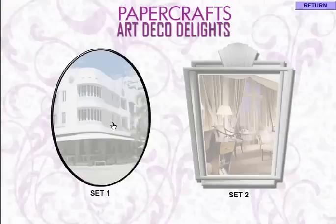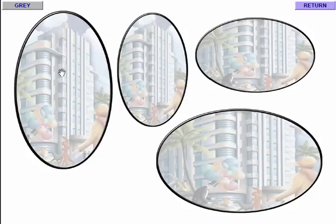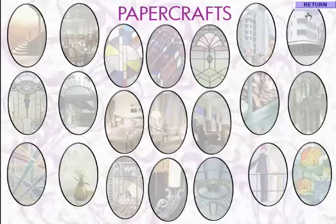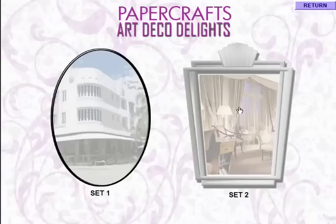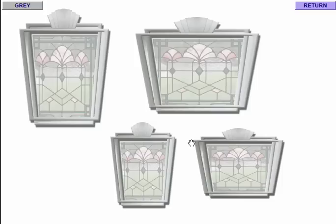We've also got cameos, which come in a circle and in an Art Deco frame. These are designed to work as A5 and A6. They can be mixed and matched and used accordingly. They also come in the Art Deco style frame, so you could use this as an A5 landscape or portrait, or A6 landscape or portrait.